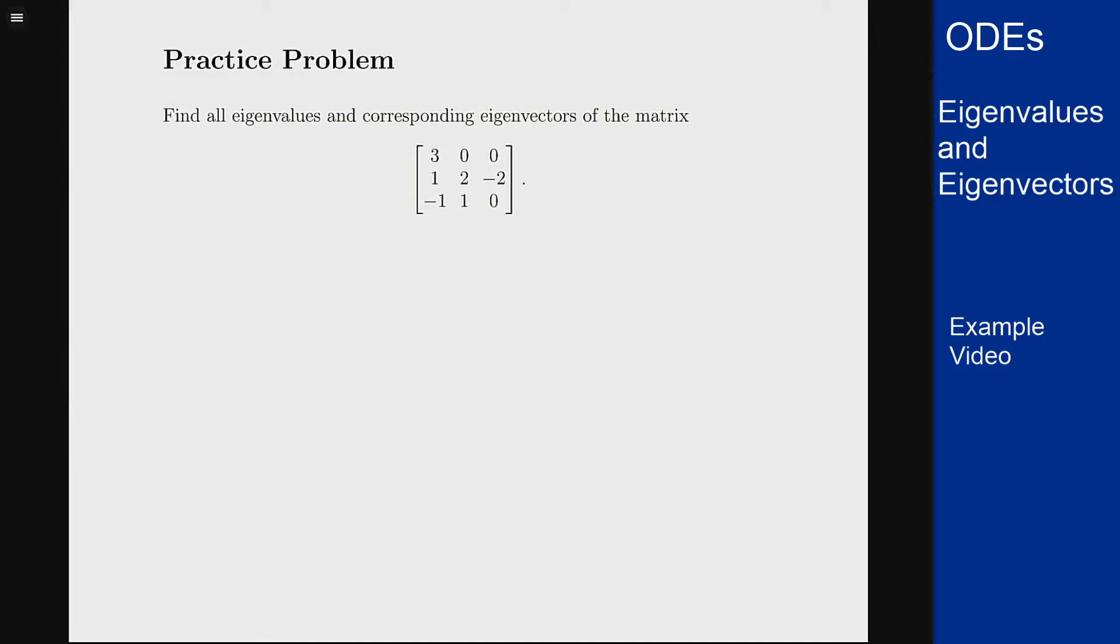In this example we want to find the eigenvectors and eigenvalues for this matrix: 3, 0, 0 in the first row; 1, 2, -2 in the second row; -1, 1, 0 in the third row.